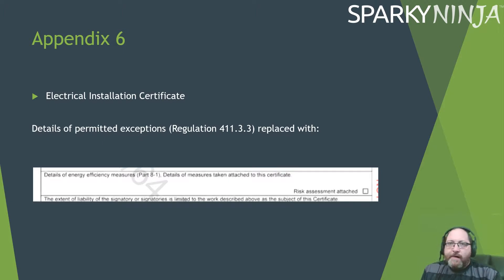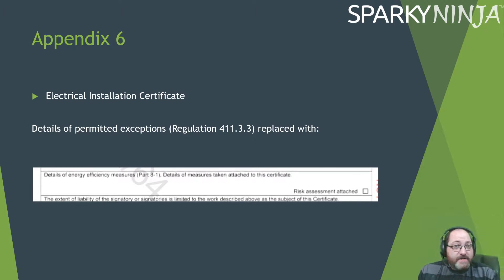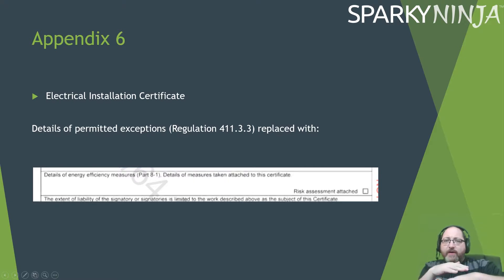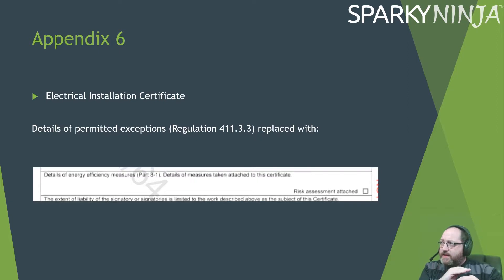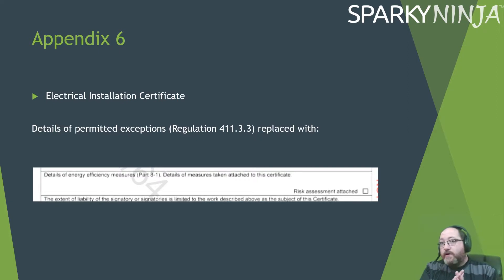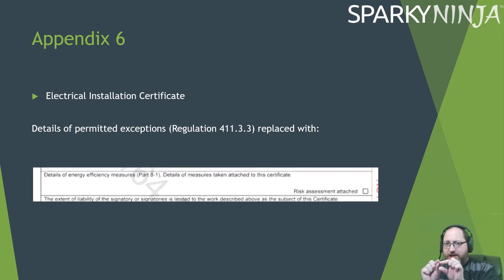Appendix six has a couple of changes. There are changes to the minor works certificate — they've restructured it and added another section. But before covering that, there's a small addition to the electrical installation certificate regarding part eight, energy efficiency. What they've done is taken away a part of it and put this in its place: under the departures you've got details of energy efficiency measures from part 8.1, and details of the measures taken on the certificate.